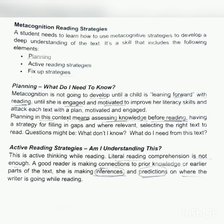Let's start with planning. In planning, what do I need to know? Metacognition is not going to develop until a child is leaning forward with reading. This will not be developed until she is engaged and motivated to improve her literacy skills and attack each text with a plan. Motivation is a very major factor, because until you are not engaged in any kind, you will not be able to improve it properly.